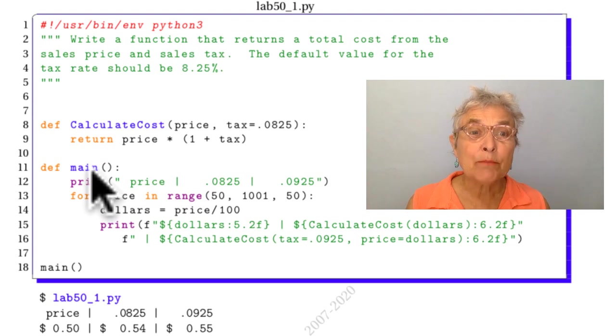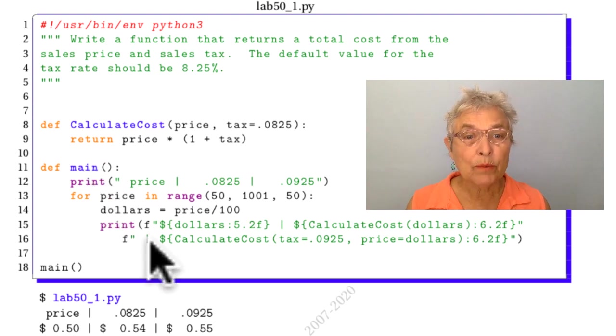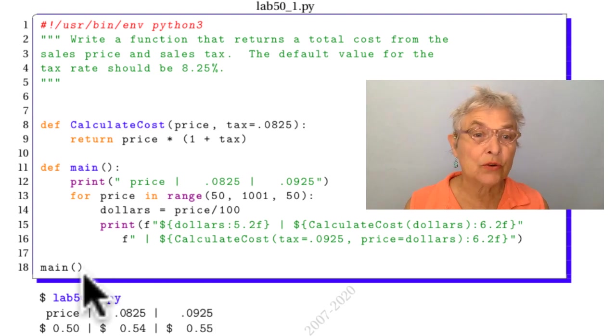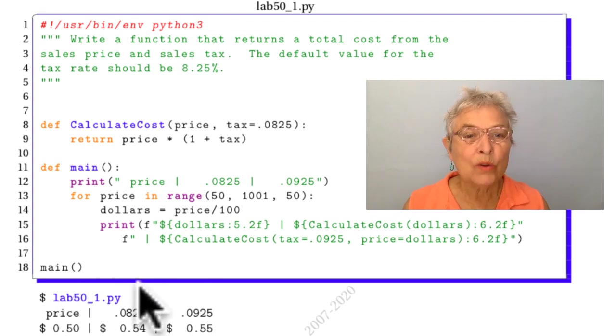In my main, I'm going to test it. I'm going to make this chart put by the cash register that shows the price, what the total cost is at the default tax rate, and what it is when we bump it up to 0.0925.